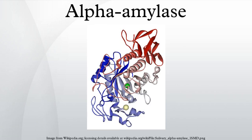It is also present in seeds containing starch as a food reserve, and is secreted by many fungi. In human physiology, although found in many tissues, amylase is most prominent in pancreatic juice and saliva, each of which has its own isoform of human alpha-amylase. They behave differently on isoelectric focusing, and can also be separated in testing by using specific monoclonal antibodies.